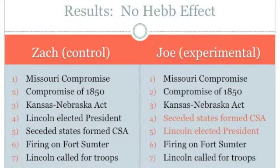When recalling a list of items, it is common to have the most errors in the middle of the sequence. Remembering the initial items is known as the primacy effect, and this occurs because they are the most repeated items and are transferred to long-term memory. Correctly ordering the last items is known as the recency effect, and this happens because the more recently discussed items are still in working memory.